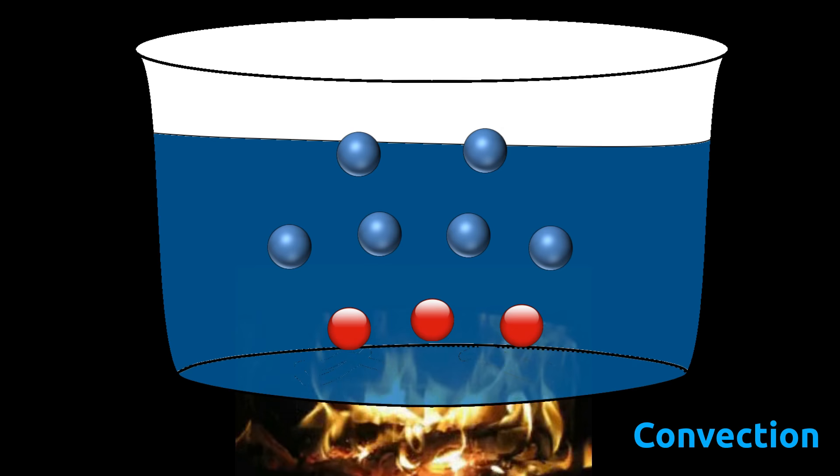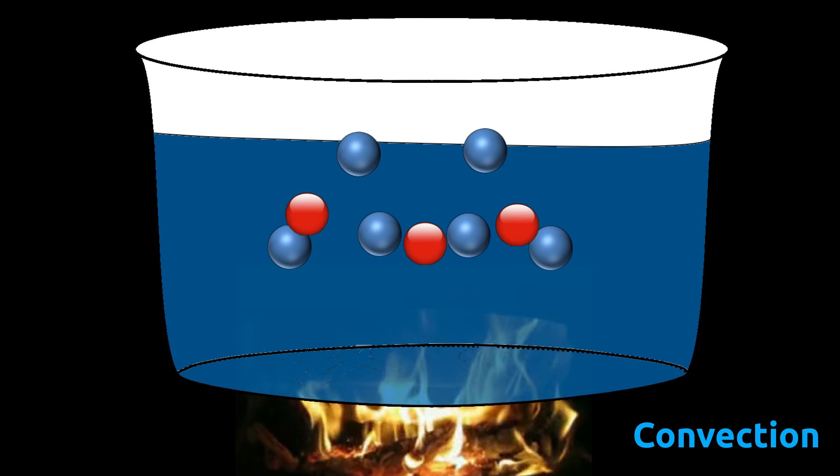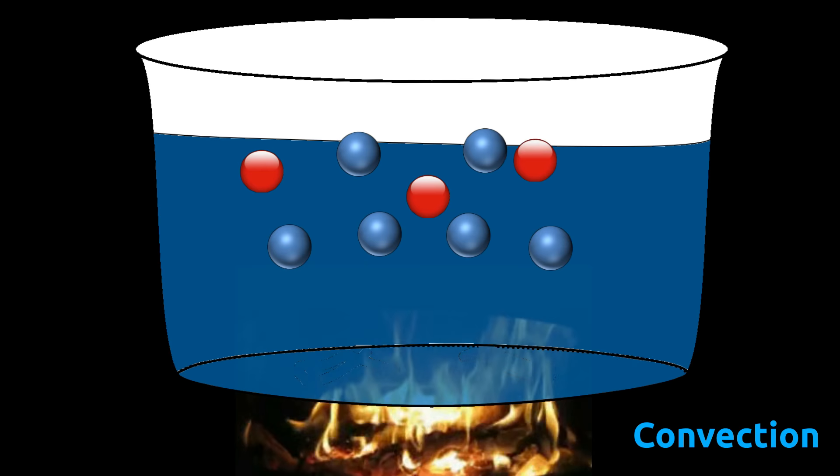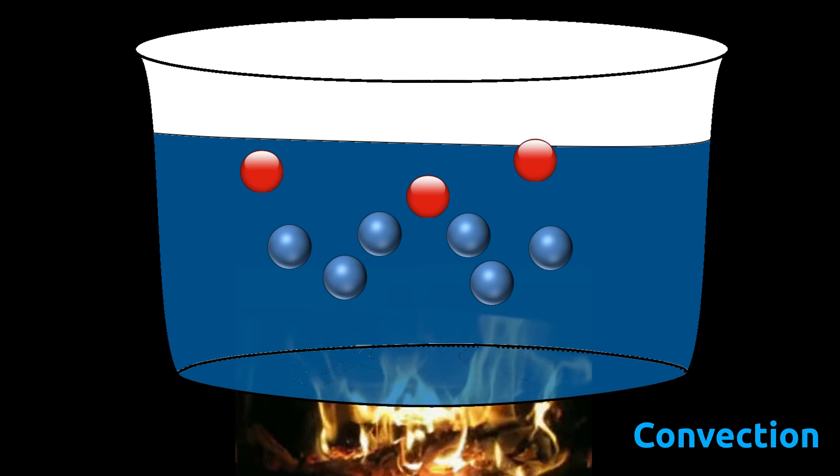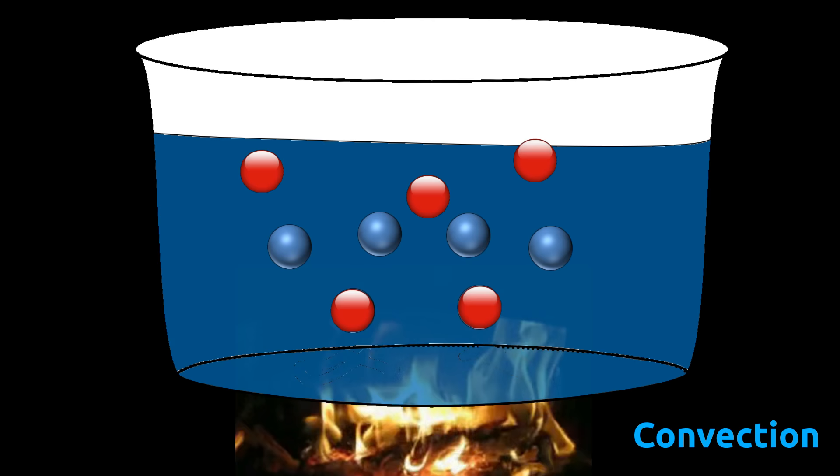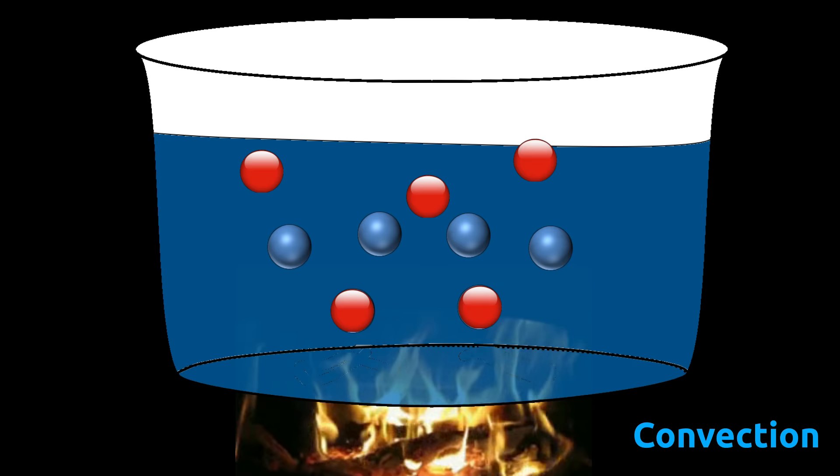We know that addition of heat causes an increase in movement of particles. Thus these particles move randomly and a relatively empty space is formed. To fill this space, particles from far areas move here. Again these particles acquire heat energy and move away. This process goes on and the whole water becomes hot.